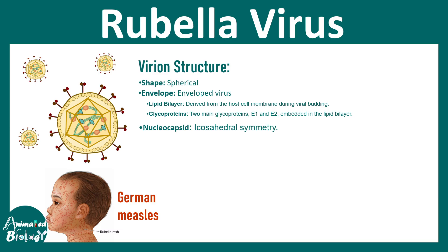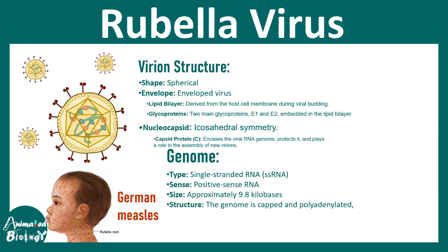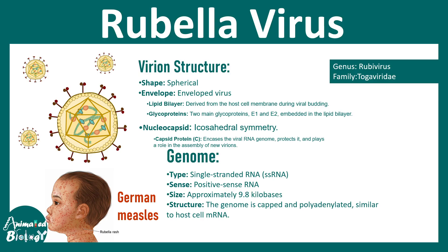There is a nucleocapsid which protects the genomic material, and it is an icosahedral capsid. The capsid has capsid proteins that work like a case to hold the genomic material. The genome is a single-stranded RNA which is positive-sense and roughly 9.8 kb in overall size. Rubella virus falls under the genus Rubivirus and family Togaviridae.